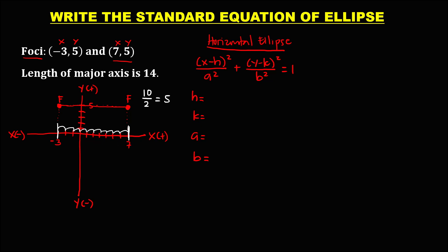We count 5 units from one focus, and this gives us the position of the center at x equals positive 2. Aligning to the focus, the coordinate of the center is (2, 5). Therefore, h is positive 2 and k is positive 5.